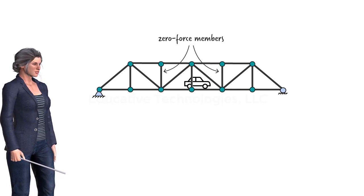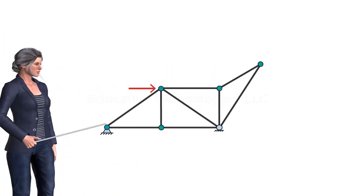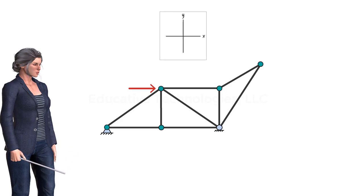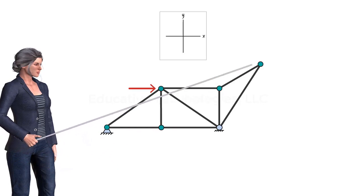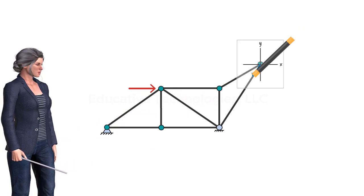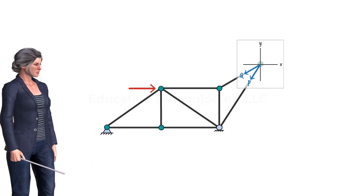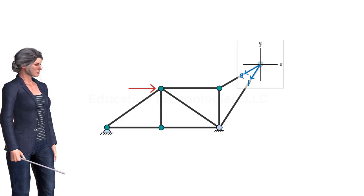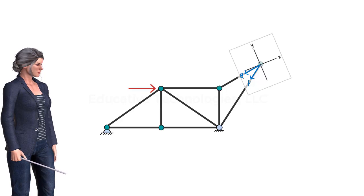Although we can identify the zero force members in a truss by analyzing the entire structure, there is a shortcut for doing the same without performing any calculations. Let's demonstrate the technique using this truss. For the structure to be in the state of equilibrium, the sum of the forces acting at each joint must be zero. Take this joint which connects two truss members. We place the origin of the XY coordinate system on the joint and show the member forces, labeling them P and Q. Since the equilibrium condition is independent of the orientation of the coordinate system, we can rotate the axes so that either X or Y axis becomes aligned with one of the two forces, and still maintain that the sum of the forces in each direction must be zero.